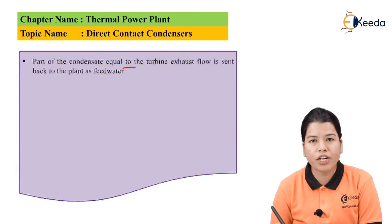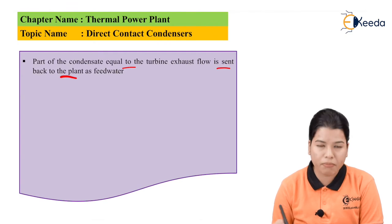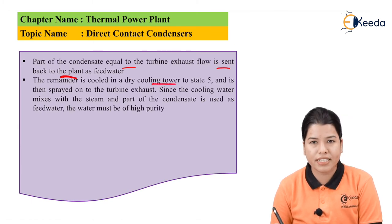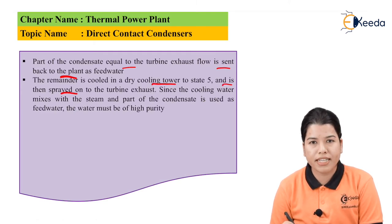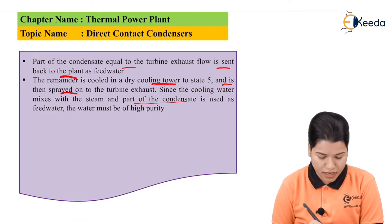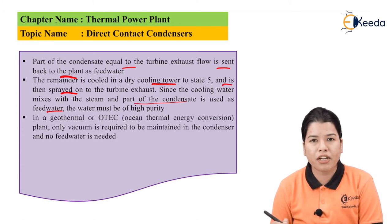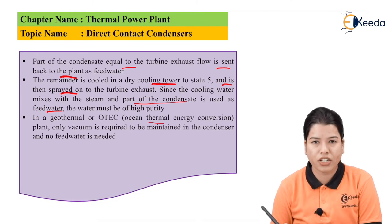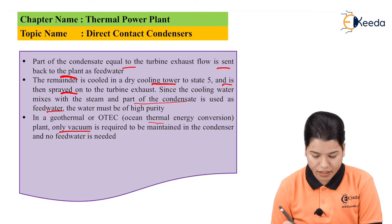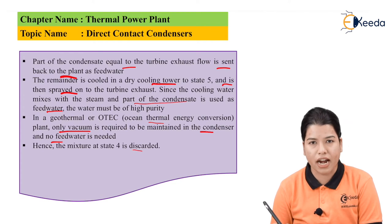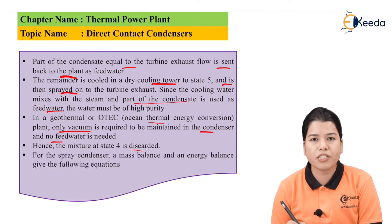Part of the condensate, equal to the turbine exhaust flow, is sent back to the plant as feed water. The remainder is cooled in a dry cooling tower at state 5 and is then sprayed on the turbine exhaust. Since the cooling water mixes with the steam and part of the condensate is used as feed water, the water must be of high quality. In geothermal or OTC (ocean thermal energy conversion) plants, only a vacuum is required in the condenser and no feed water is needed, but in a thermal power plant, feed water is required, hence the mixture at state 4 can be discarded.